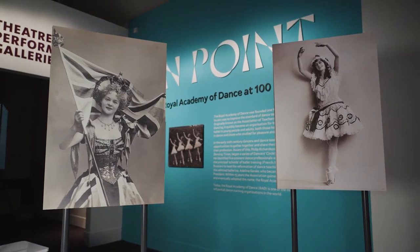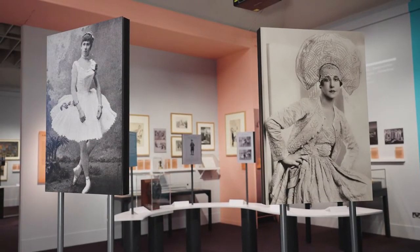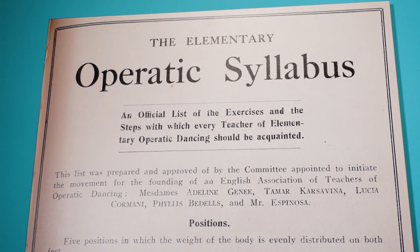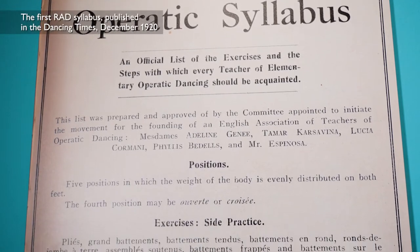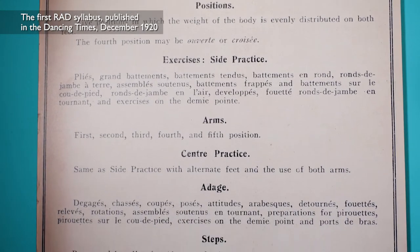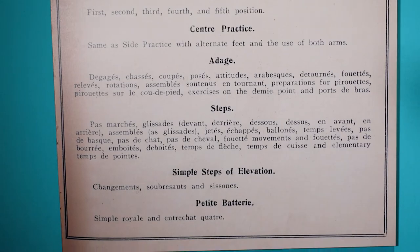Richardson identified five eminent dance professionals — the international best of the best — who represented the principal schools of ballet training: French, Italian and Russian, and who agreed to form a committee to lead the reformation of dance teaching. Their first task was to devise a syllabus that would provide the foundation for a new British standard. Once agreed, this was presented to a packed meeting of dancers and teachers at the Grafton Galleries in Regent Street on December 31st, 1920, at which the association was officially established.